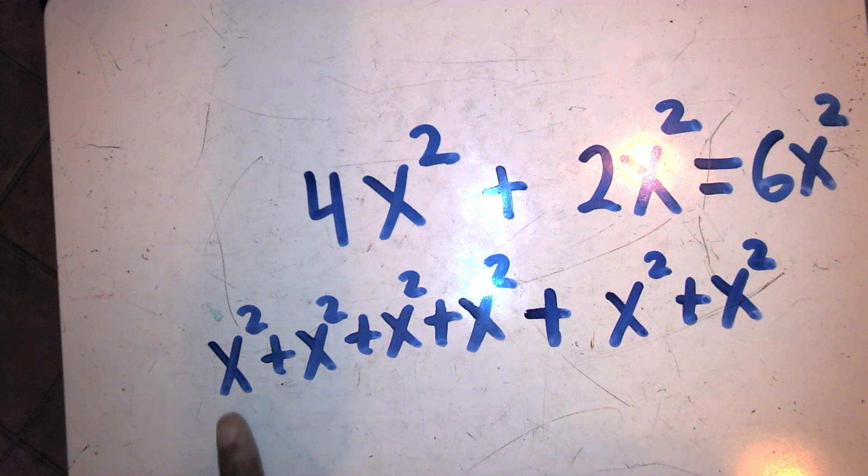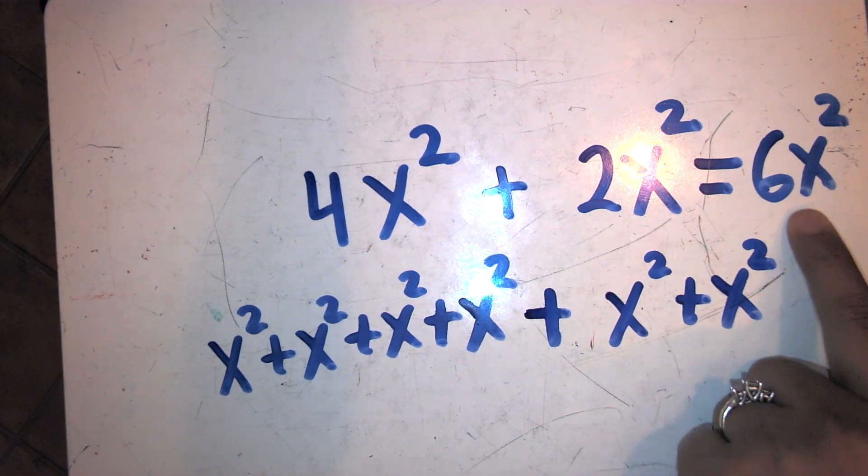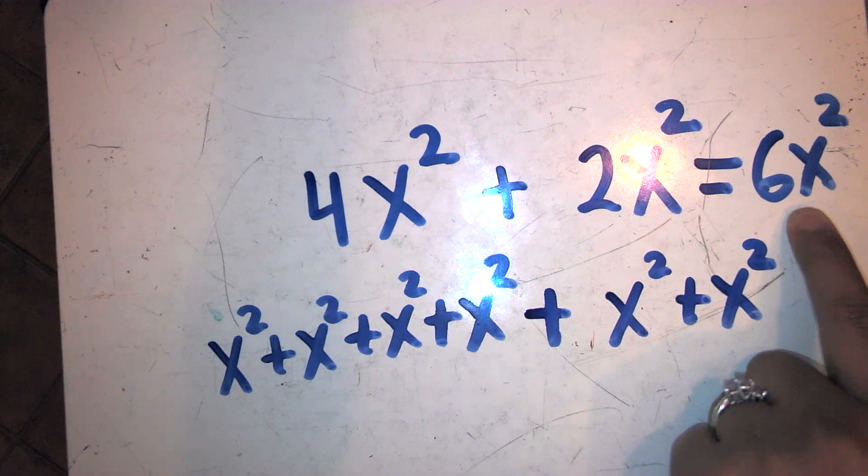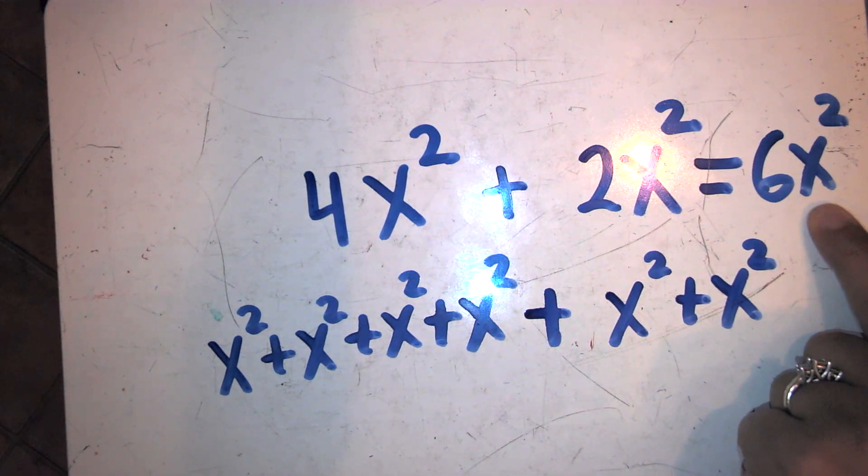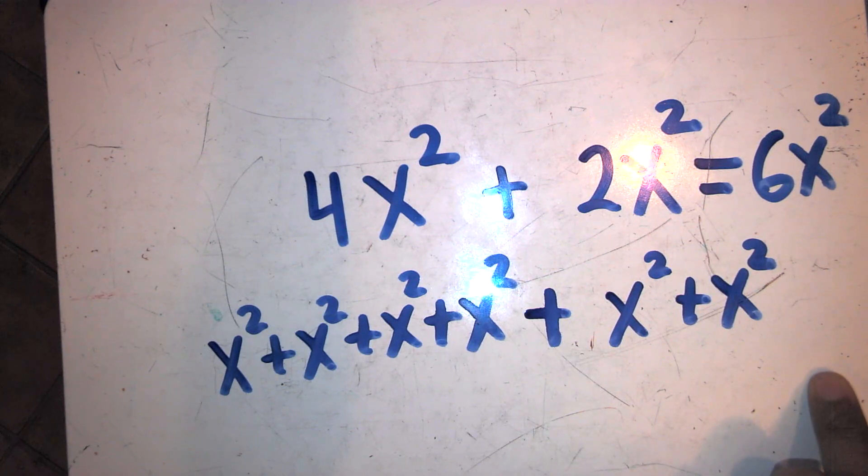So I have here one, two, three, four, five, six groups of x squares. Notice that the variable didn't change and the exponent didn't change when I combine like terms.